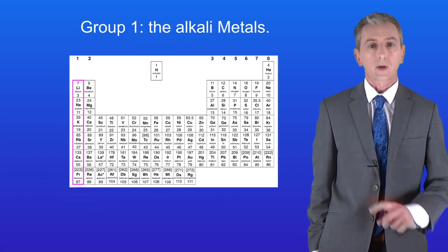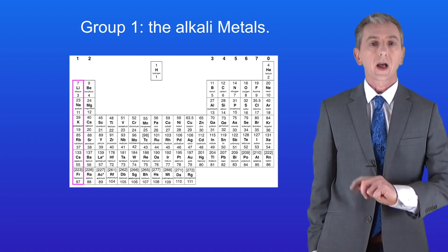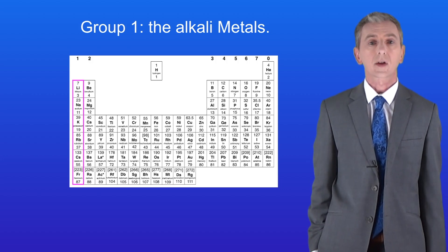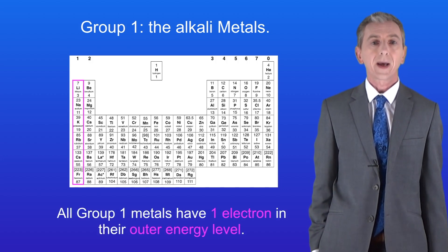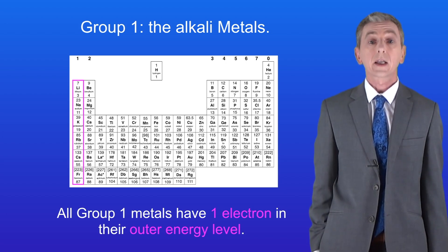I'm showing you Group 1 here. Group 1 is called the alkali metals and you could be asked that in your exam. All Group 1 metals have got one electron in the outer energy level, and again you need to learn that.